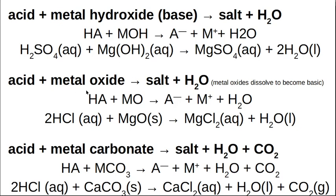An acid plus a metal oxide gives you a salt and water. H for the acid, A for the anion, the metal ion, and O for oxygen gives you the anion, the metal ion, and water. Metal oxides generally become basic — for example, magnesium oxide and water gives magnesium hydroxide. So hydrochloric acid plus magnesium oxide gives magnesium chloride and water.